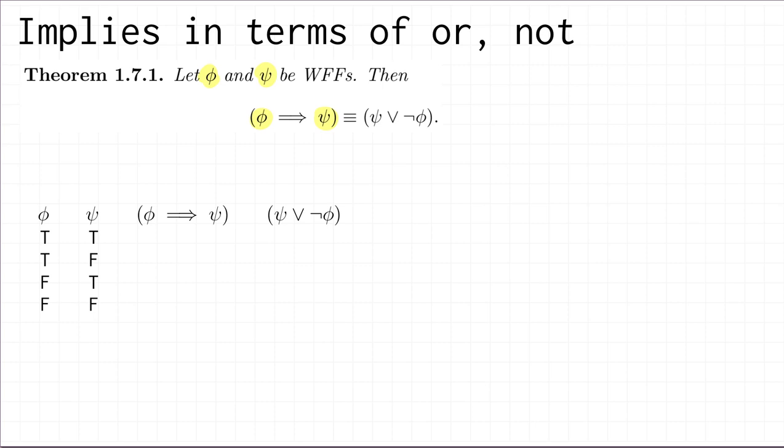As usual we're going to do the proof of this logical equivalence by drawing up a truth table. Under any truth assignment either phi is true or false and either psi is true or false. So in order to check that the two well-formed formulas have the same truth value under every truth assignment we're simply going to check the four possible combinations of truth values for phi and psi. I've written those in the table at the bottom here.